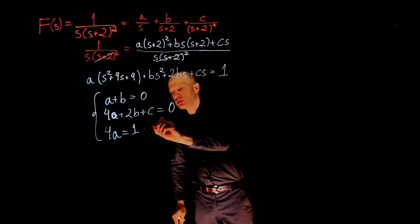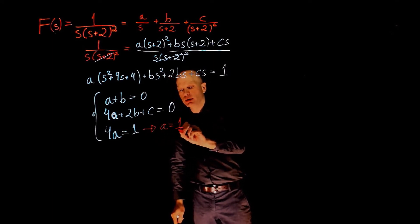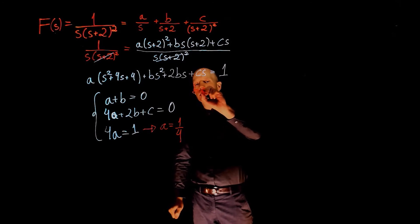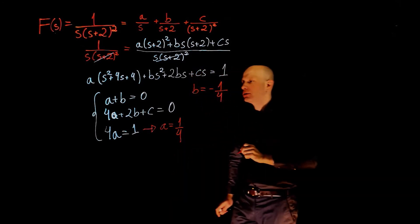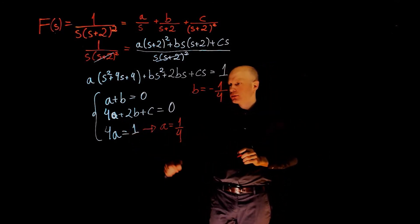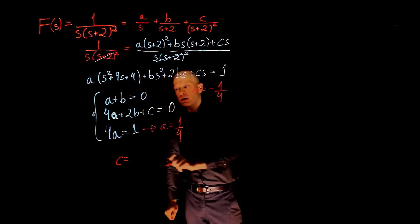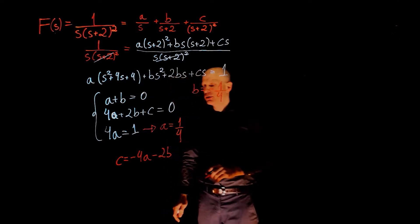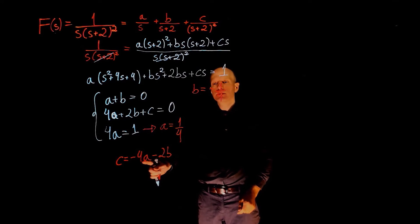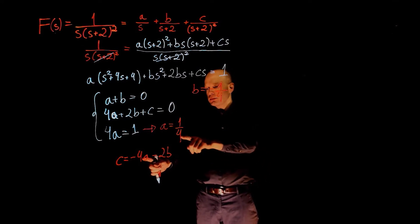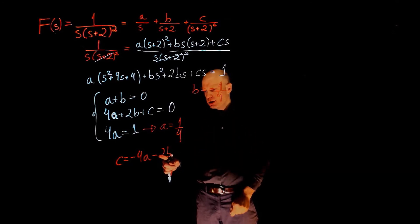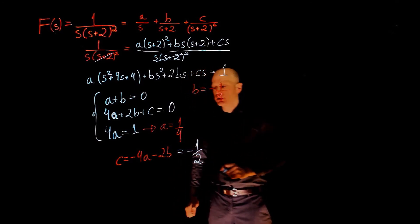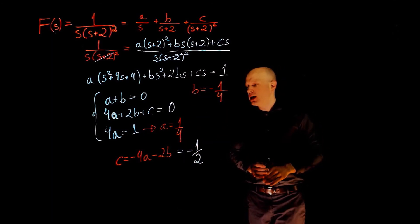From the last expression we can get A: A is 1/4. If A is 1/4, from the first equation B is negative 1/4. Looking at the second equation, C equals negative 4A minus 2B. A is 1/4, so negative 4A is negative 1. B is negative 1/4, so negative 2B is positive 1/2. Negative 1 plus 1/2 gives C equals negative 1/2.